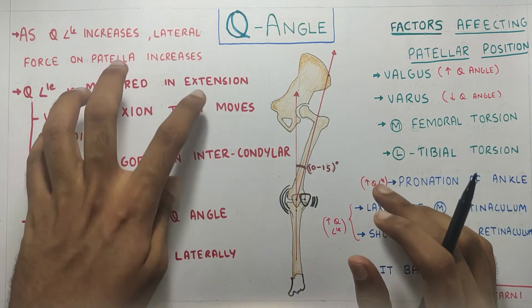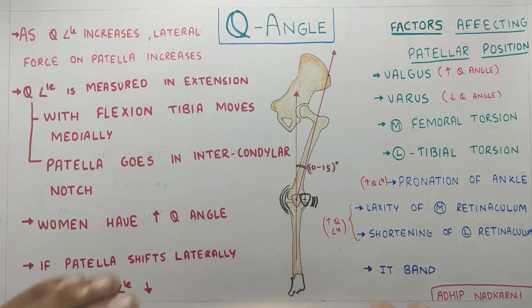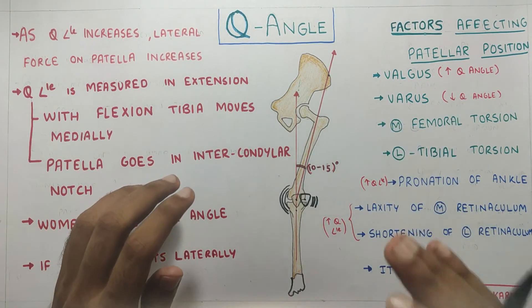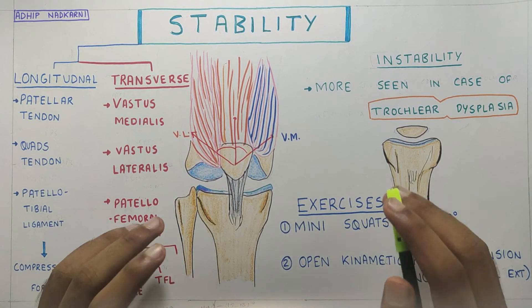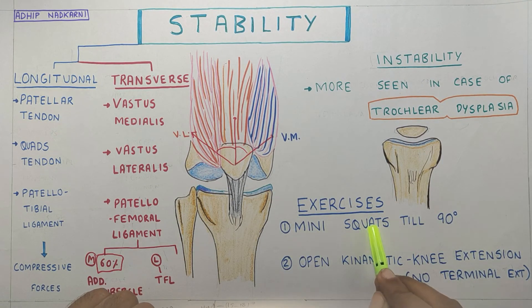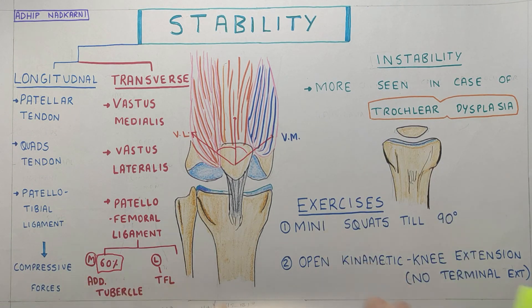Now that we know what Q angle is and the factors that affect it, let's look at exercises for patellar instability. During patellar instability, the exercises that can be given are mini squats up to 90 degrees and open kinematic chain knee extension with no terminal extension. I have explained this in my previous video on knee kinetics, but I will explain it here as well.